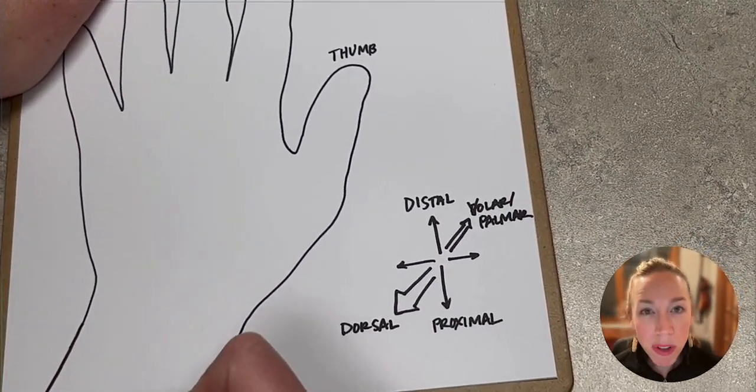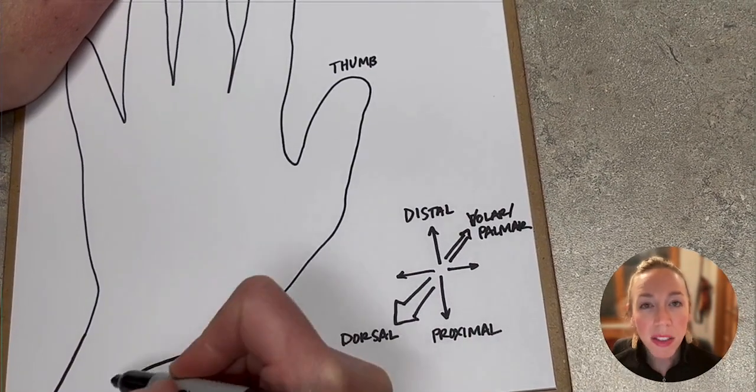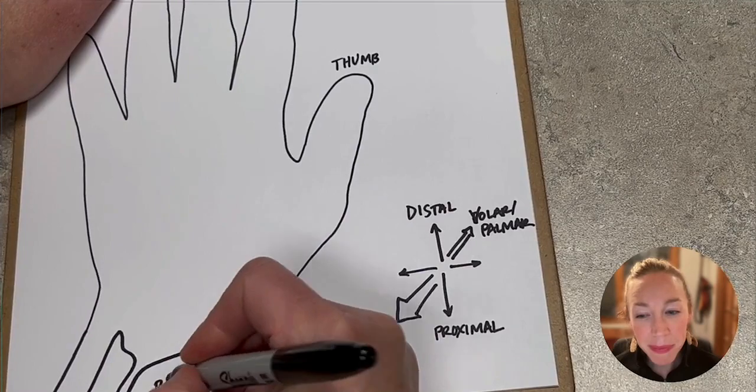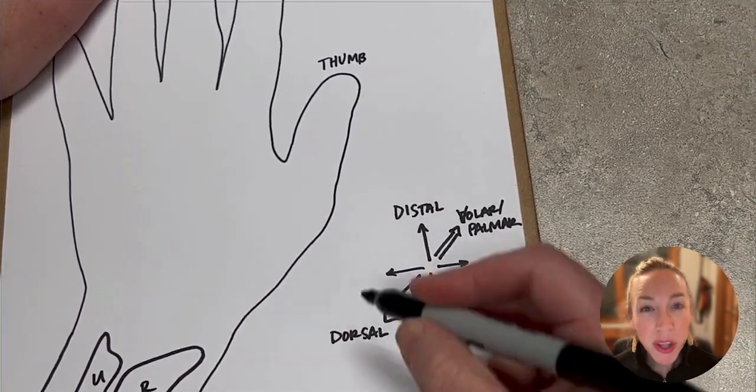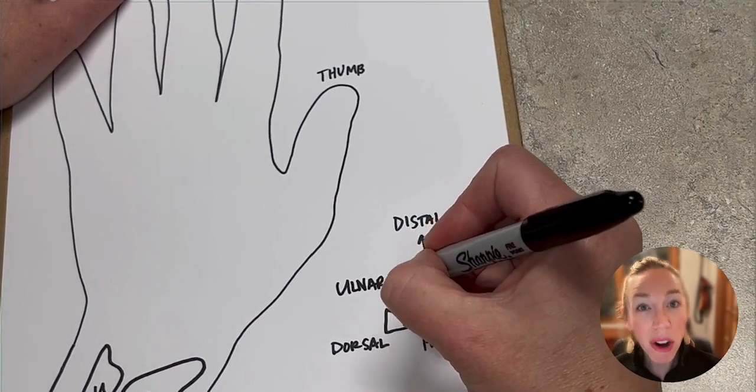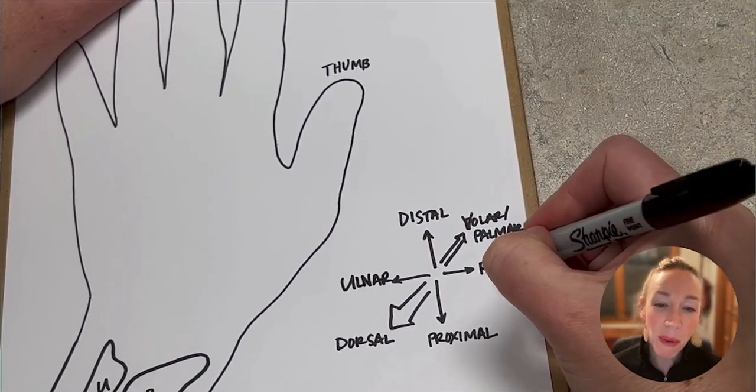The bones in the forearm, remembering where those are, radius is on the thumb side and ulna is on the other side. So back to our diagram, things this way in the hand and wrist are ulnar and things that way are radial.